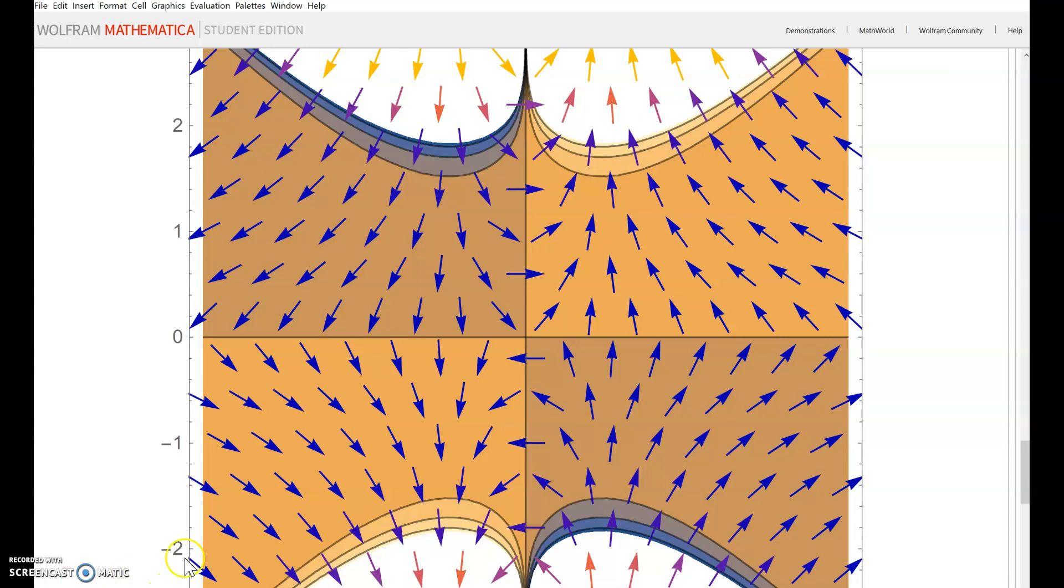One more thing—notice that gradients are always perpendicular to contour lines. You can see these arrows are perpendicular to the contour lines. That's it. Thanks for watching.